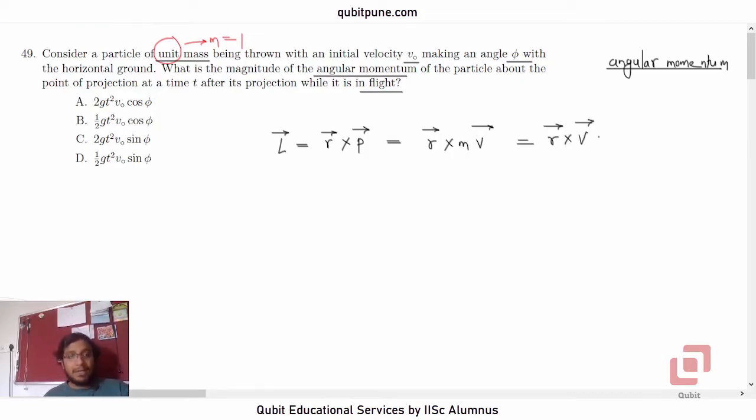Can we write an expression for the position vector R bar for this projectile? Yes. We can easily write it. Let us assume that the origin itself is the point of projection. This is x-axis. This is y-axis. Suppose this is the trajectory of the projectile. Let me also show the initial velocity v naught bar and with the angle of projection phi.